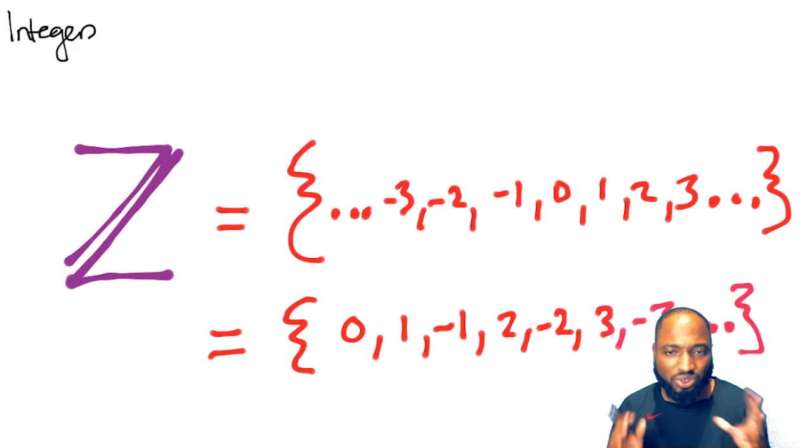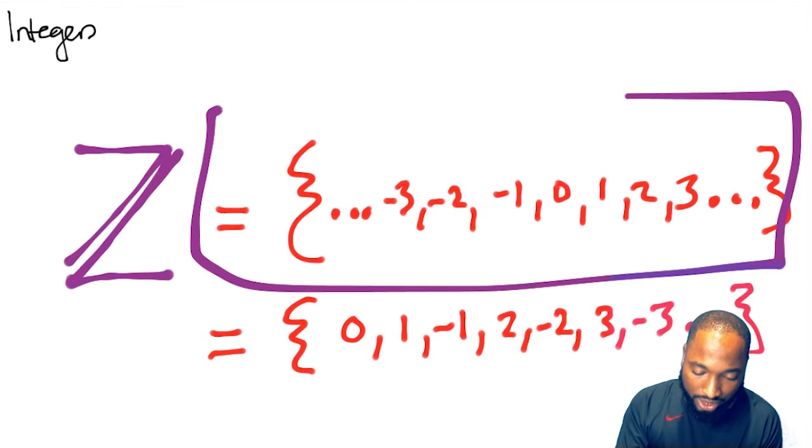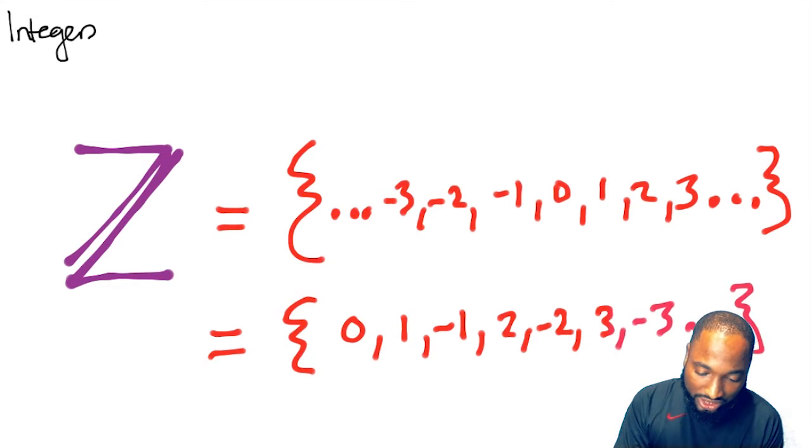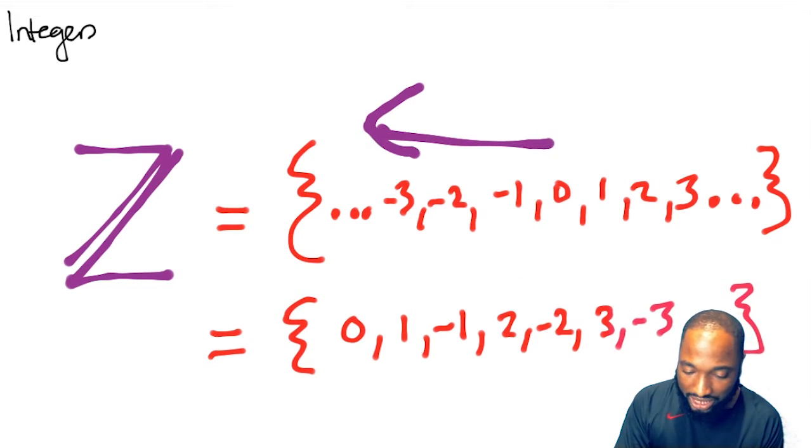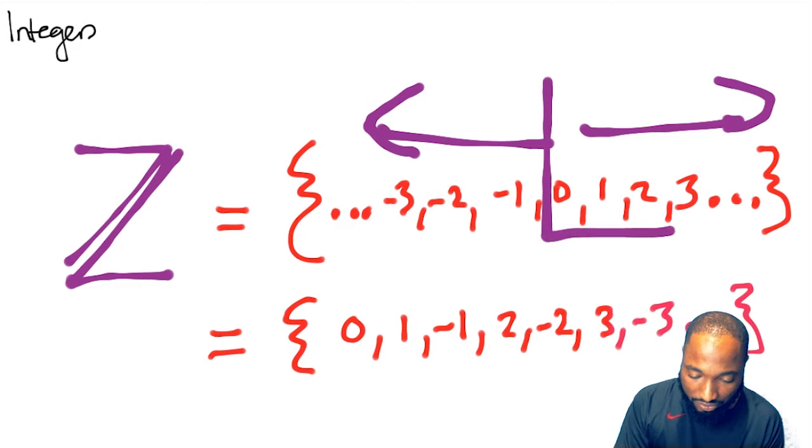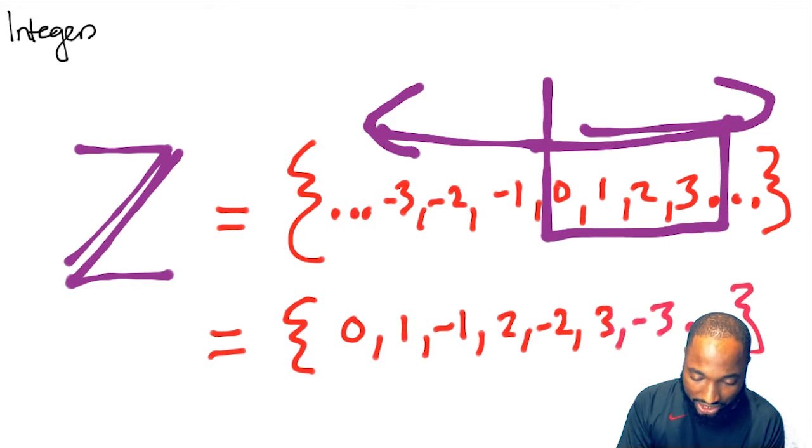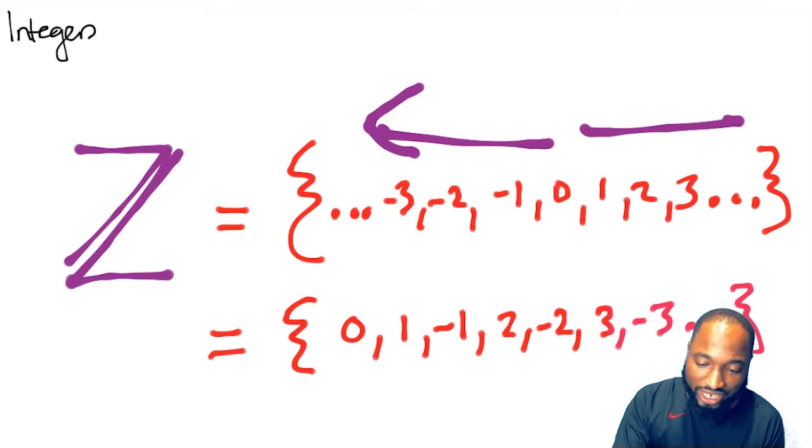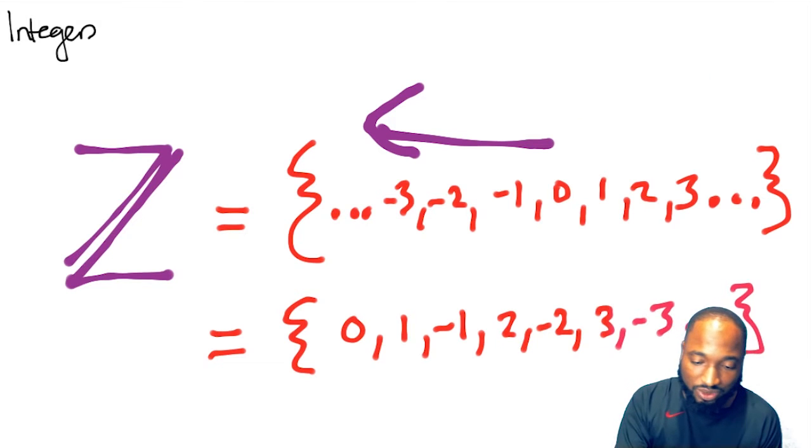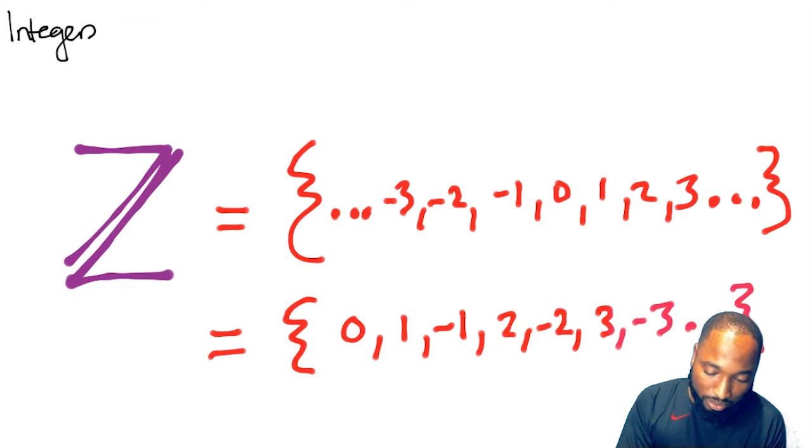Integers—there are two ways you can represent integers. This is the more common way, where we show that integers include negative numbers as well as positive numbers. This is the whole number section here, and we want to add negative numbers like negative one, negative two, negative three, and so on, going backwards like this.